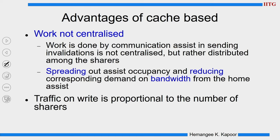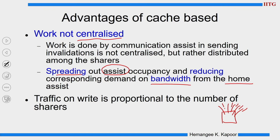Another advantage of cache-based is that being distributed, work is not centralized - actions are spread out. Although every node's communication assist gets involved, it reduces the overall bandwidth demand on the system. In a flat memory-based system, the home node sends all invalidations and waits for all acknowledgements, creating bandwidth contention at home. In the cache-based system, bandwidth demand at the home node is reduced. Traffic on a write, similar to flat memory-based, is still proportional to the number of sharers; only the latency is higher in cache-based.